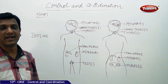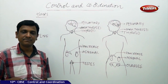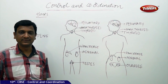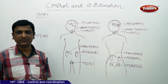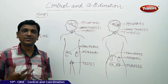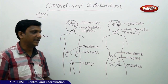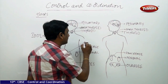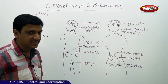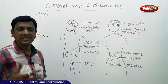The pancreas secretes two hormones: insulin and glucagon. Insulin is a very important hormone in our body. If insulin is not produced, you are under a condition called diabetes or sugar disease. If the pancreas is damaged or not properly functioning and not producing insulin, the glucose levels in your blood rise.